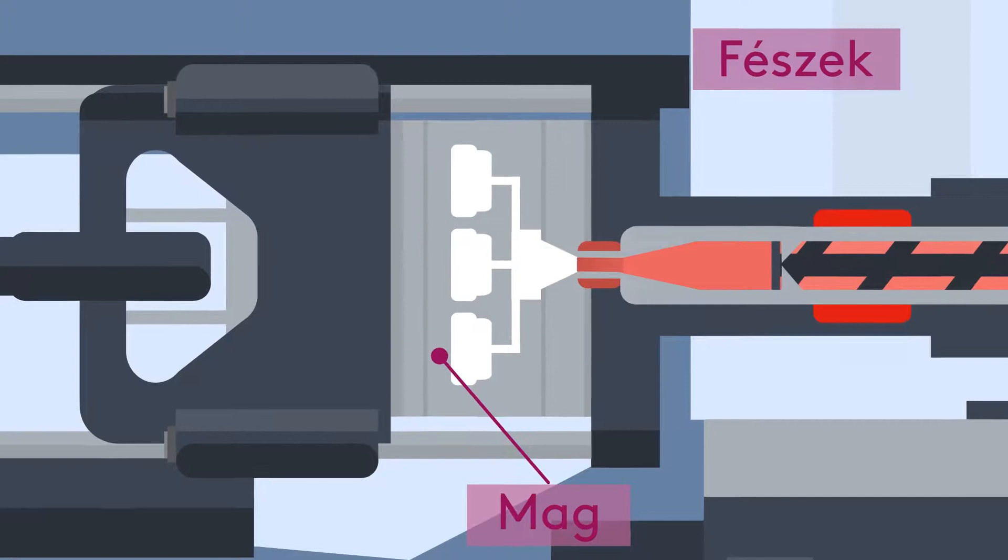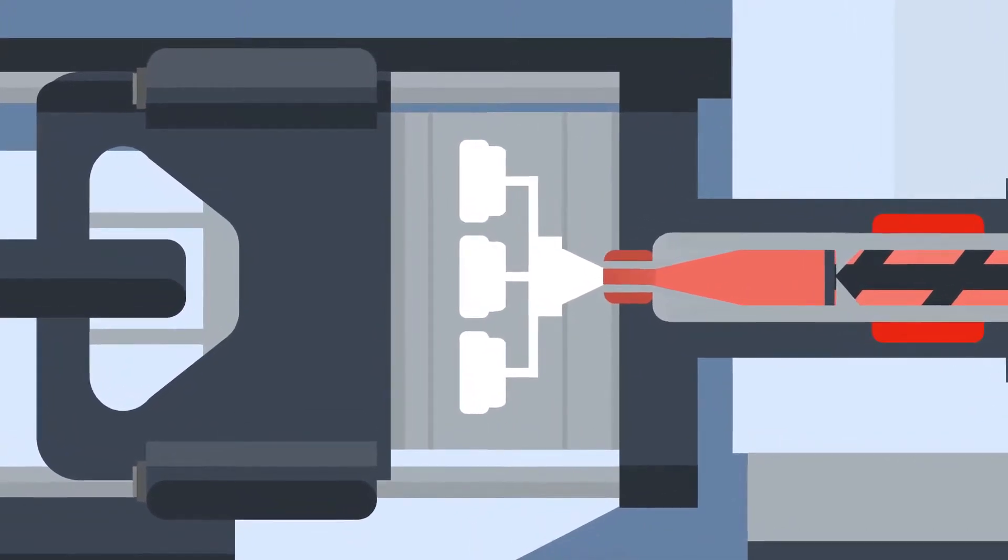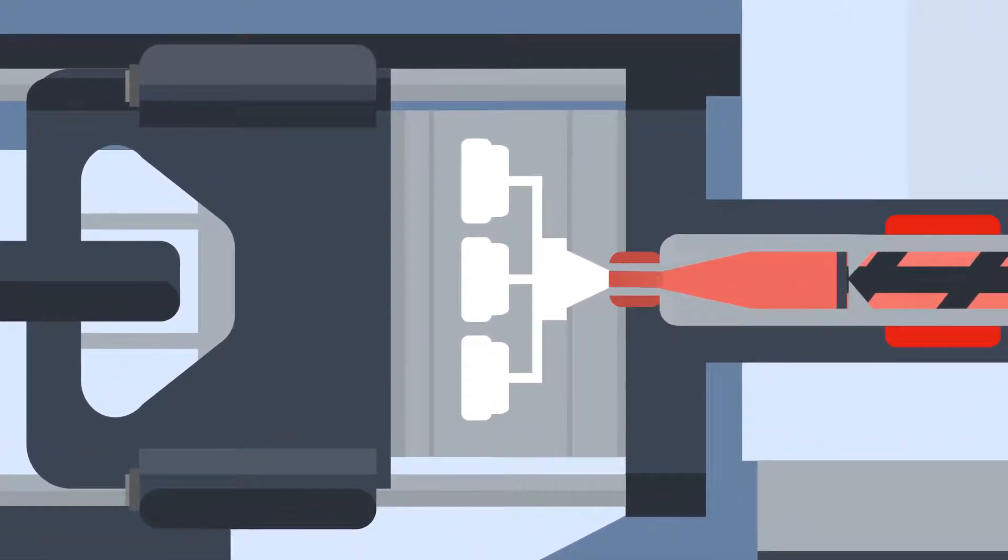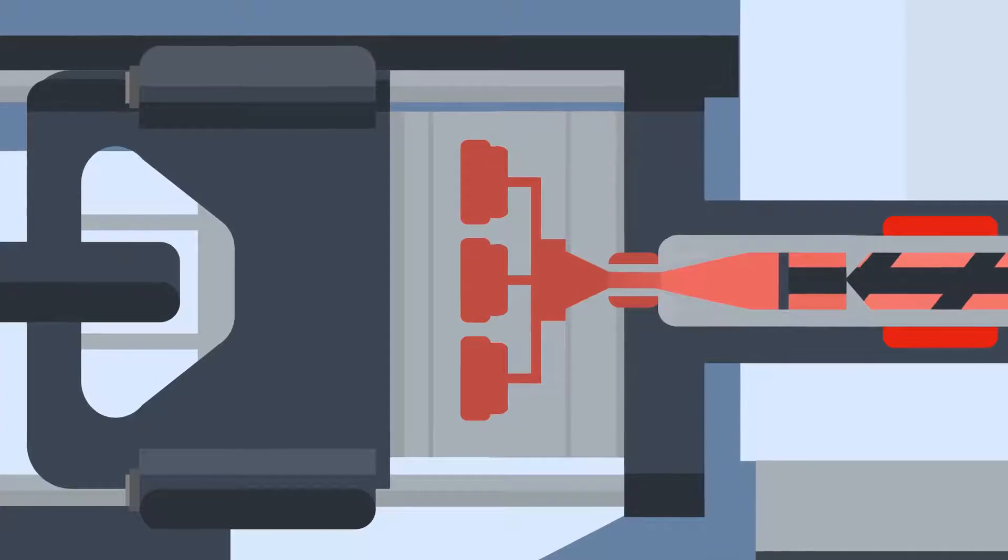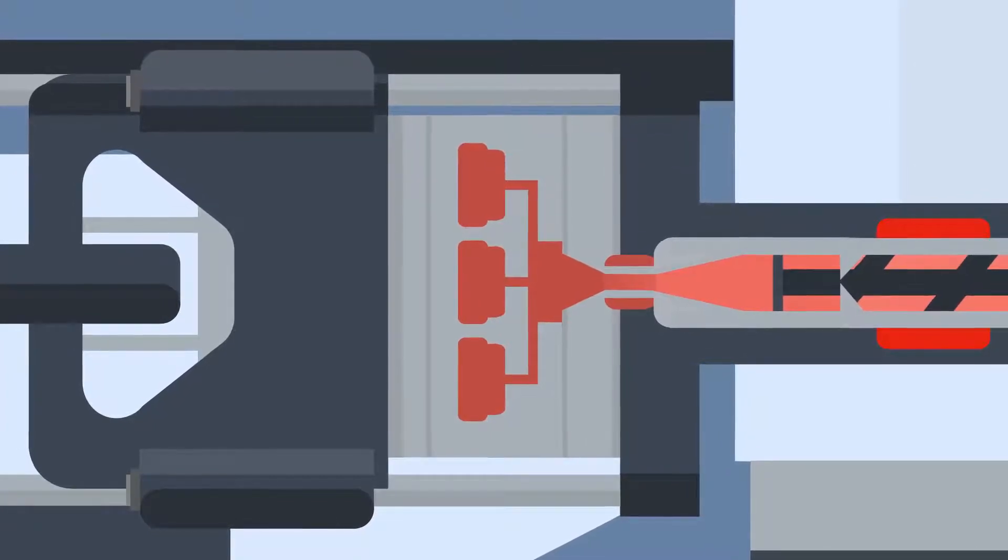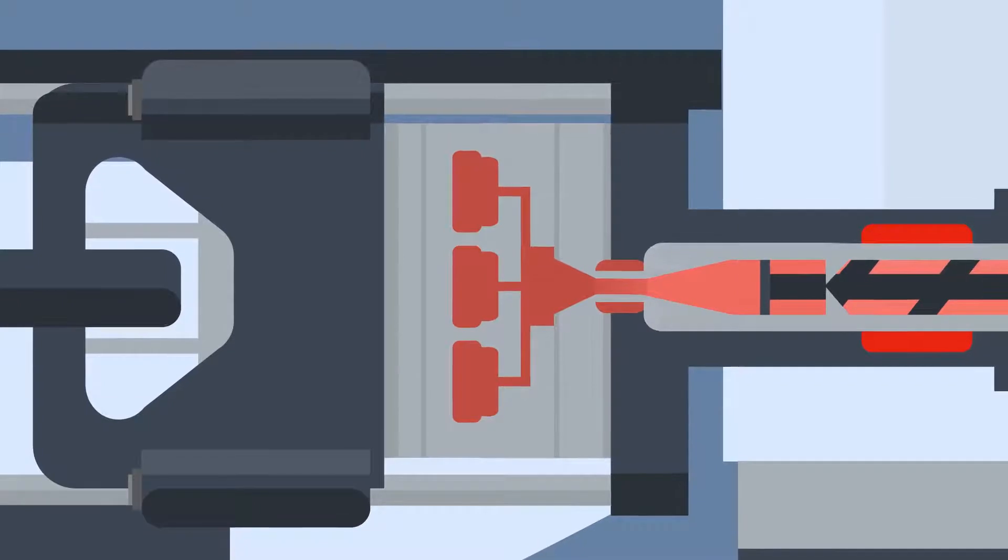When closed, the clamp will apply pressure to the tool, ready for the injection of the plastic. Once the clamp pressure is at an optimum level, the plastic is injected by a screw at high speed and pressure into the cavity. A gate inside the tool helps to control the flow of the plastic.